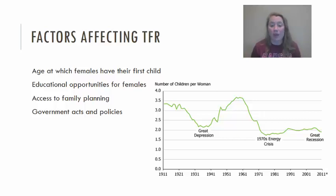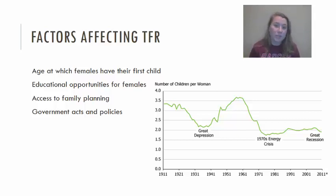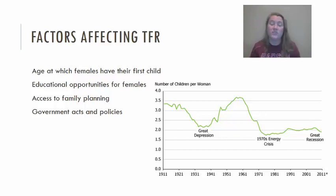Looking at this graph of total fertility rate in the United States going back to about 1911, we can see that during the Great Depression women were not having as many children. People didn't have as much money or food, and were likely living with other relatives. However, the rate was still above an average of two children per woman.